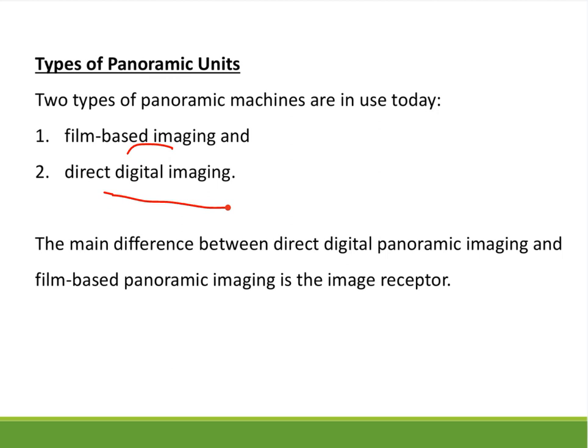In direct digital imaging, as soon as you take the exposure you see the image on the display. In indirect imaging, you need to scan the image sensors or receptors before you can see an image. We have two types of panoramic units: film-based and direct digital, which can be CMOS, CCD, or a flat panel. The main difference is the image receptor — one uses film, the other uses a sensor.